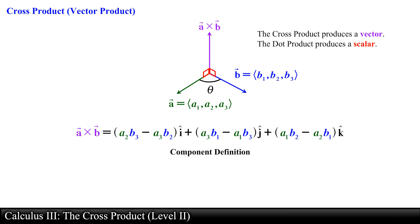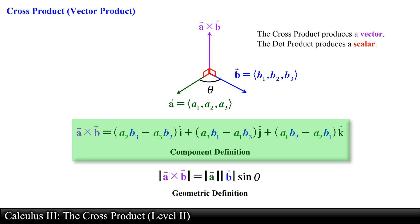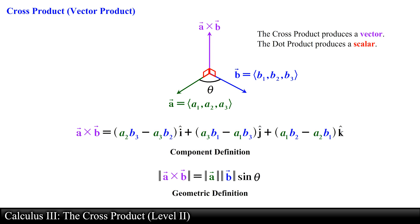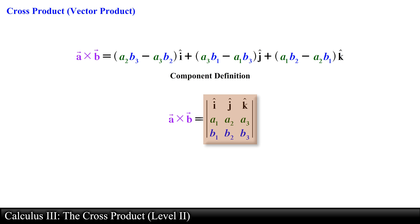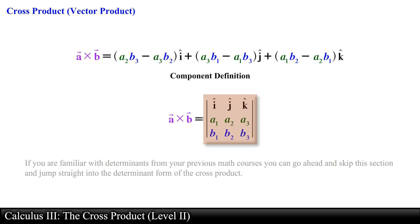This is an alternative way of computing the cross product by using the components of two vectors in space. Similar to the dot product we now have two distinct ways of computing the cross product: we can use the geometric definition or the component definition. The component definition of the cross product is not an easy formula to remember. Luckily there is a handy mnemonic that you can use, and we use the notation of determinants to make it easier to remember. If you are familiar with determinants from your previous math courses you can skip this section and jump straight into the determinant form of the cross product.